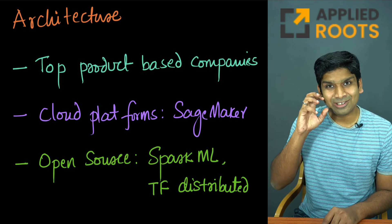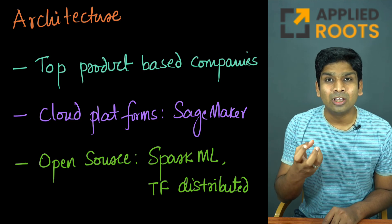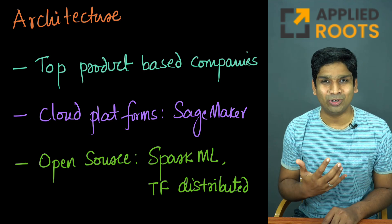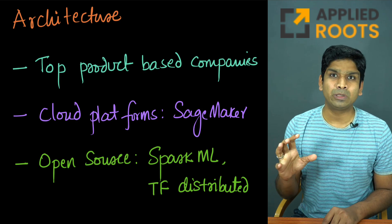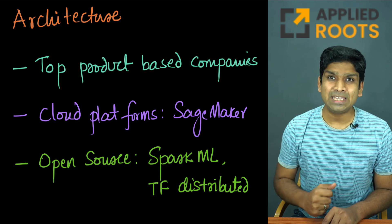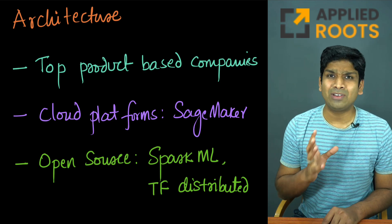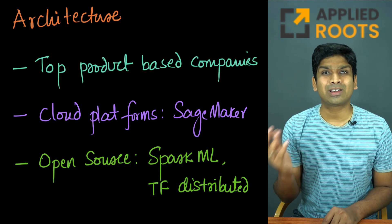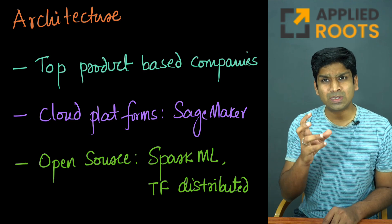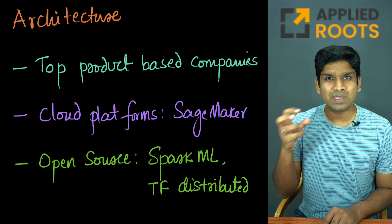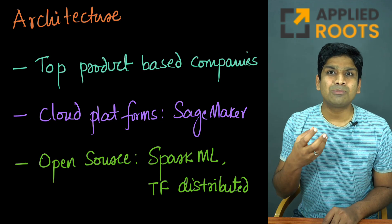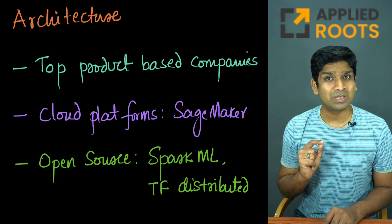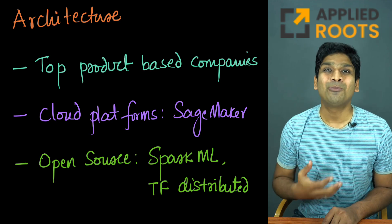Most importantly, we'll take a lot of examples and ideas from open source libraries, because you can see the code and understand exactly what's happening under the hood. We'll look at Spark ML, which is a very popular distributed machine learning platform. We'll also look at TF Distributed and other examples — for instance, there is a distributed version of XGBoost which can work on a cluster of computers. We'll talk about design choices and see what design patterns and architectural strategies these libraries have actually employed, which we can understand well because they're open source.